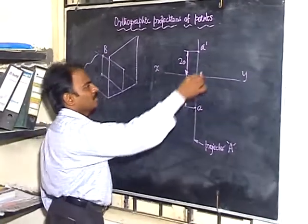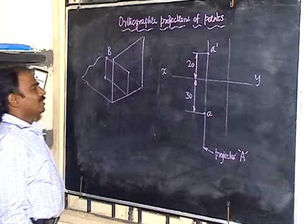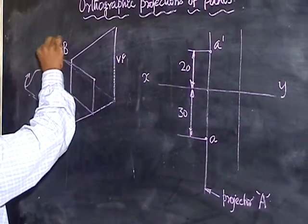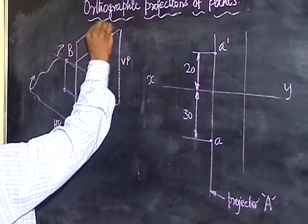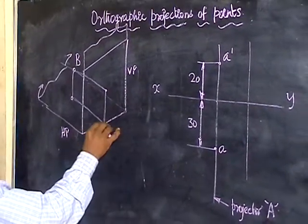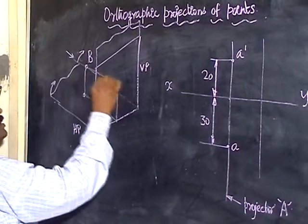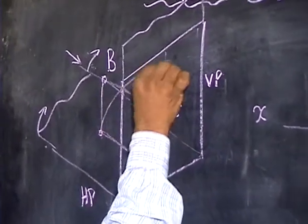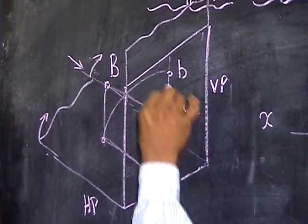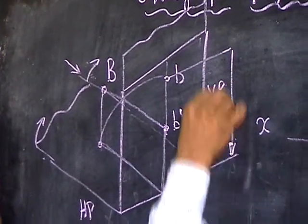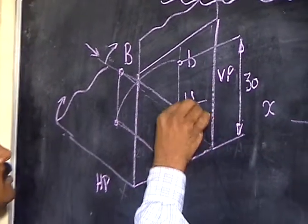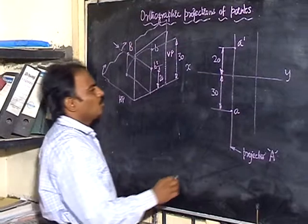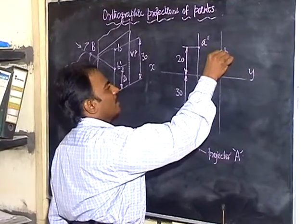Introduce another projector for B. Here we have a vertical plane and a horizontal plane. As usual, rotate the plane. The planes are folded in, so you get the front view. When you view from here, you will get B'. You just rotate this particular line here and you will get B', which is at a distance of 30mm above the XY line. B is located 20mm above the XY line, and D is located at 30mm above the XY line. Both the top view and the front view lie above the XY line.